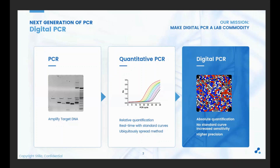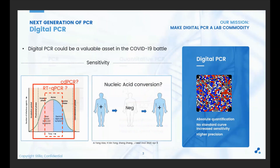Digital PCR allows increased sensitivity and higher precision, and with its improved sensitivity might bring important information to manage a COVID-19 outbreak. For example, gaining sensitivity might allow a larger overview of the virus infection timeline where viral charge might be lower at onset or remission. As another example, nucleic acid conversion cases have been reported; however, it is not clear if these are real events or if RT-qPCR lack of sensitivity could explain this observation. Digital PCR's gain of sensitivity could give a hint in these various open questions.